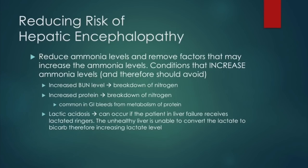To reduce the risk of hepatic encephalopathy, reduce ammonia levels and avoid conditions that increase ammonia: elevated BUN (increased nitrogen breakdown), GI bleeds (protein in blood metabolizes into nitrogen then ammonia), and lactic acidosis. Avoid lactated Ringer's in liver failure patients, as the unhealthy liver cannot convert lactate into bicarb, therefore increasing lactate levels.